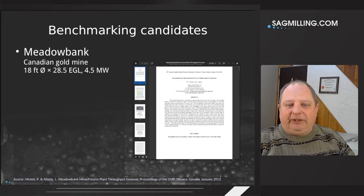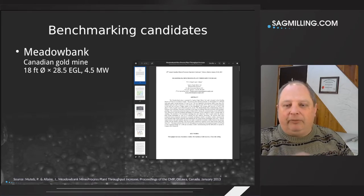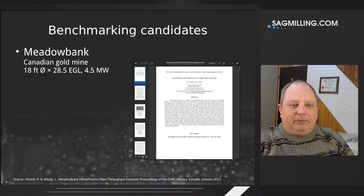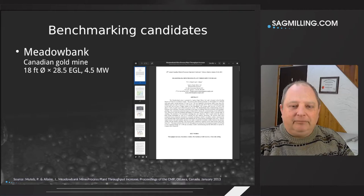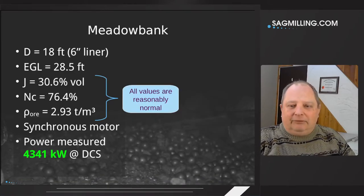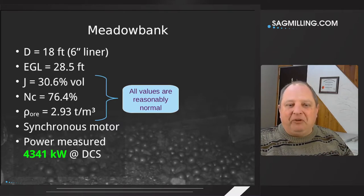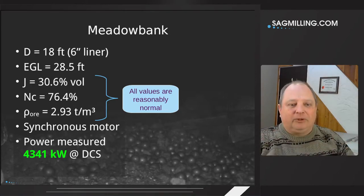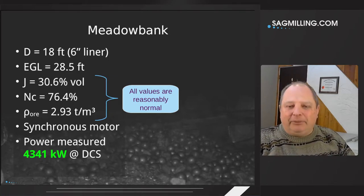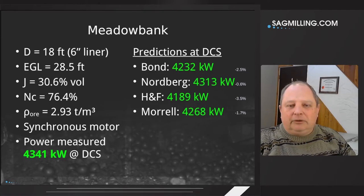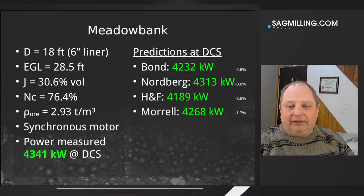We're going to run through three benchmarking studies to see how the four models line up with industrial observations. The first example is Meadowbank, a Canadian gold mine in the Arctic. It's a reasonable-sized ball mill at 18 feet — not too big, not too small. Its geometric parameters are all pretty normal: filling level of 31% (32% would be most normal), and critical speed at 76%, a little high but nothing outrageous. When we look at the predictions from the four models, they're all extremely close to what was measured, as expected for these normal conditions.